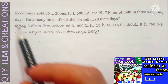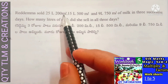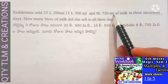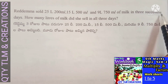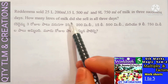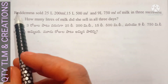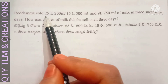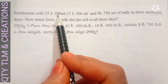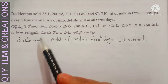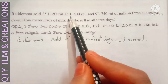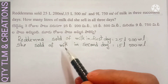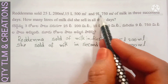Next question: Reddamma sold 25 liters 200 ml, 15 liters 500 ml, and 9 liters 750 milliliters of milk in three successive days. How many liters of milk did she sell in all three days? Reddamma sold milk: first day 25 liters 200 milliliters, second day 15 liters 500 milliliters, third day 9 liters 750 milliliters.